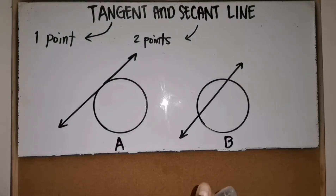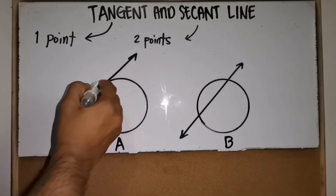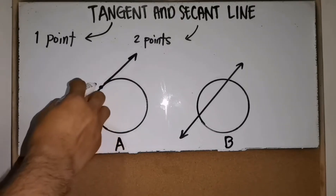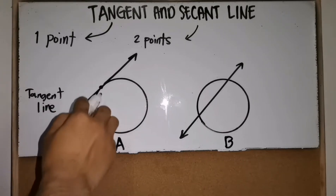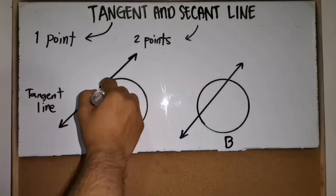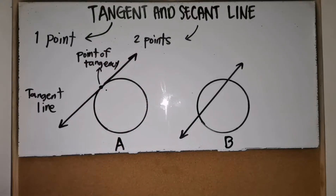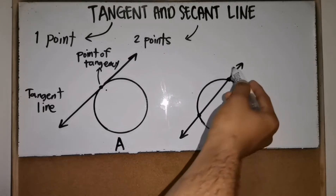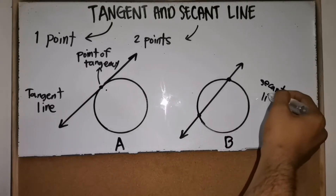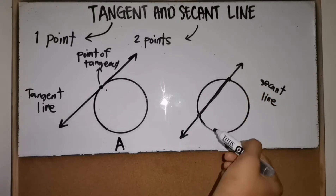The figures below are examples of tangent and secant lines. In figure A, the line intersects the circle at exactly one point, so figure A is a tangent line, and this point is called the point of tangency. In figure B, the line intersects the circle at exactly two points, so this line is a secant line, and as you can see, this secant line forms a chord.